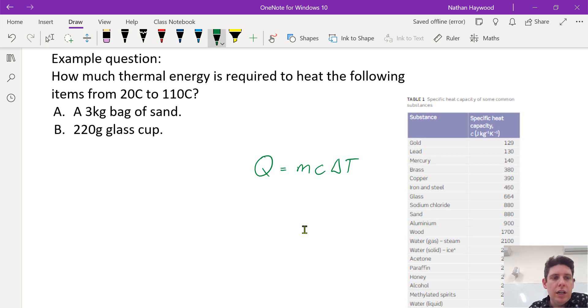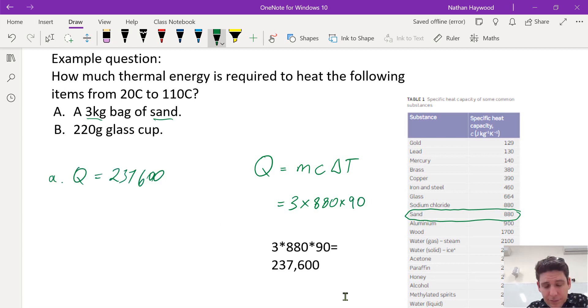So the first example, we're looking at three kilograms of sand. So we look up the specific heat capacity of sand, which is 880. So we substitute that in. The mass is in kilograms times specific heat capacity times the change in temperature. It's gone up 90 degrees Celsius. So that is our thermal energy required q in joules.